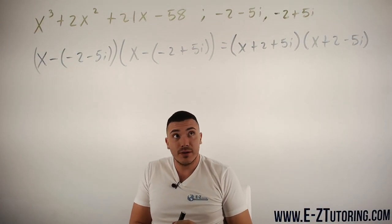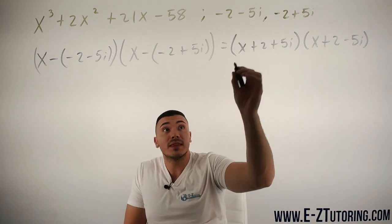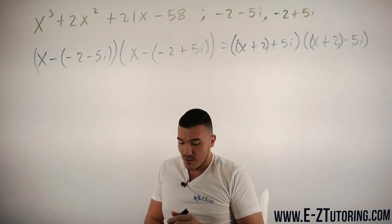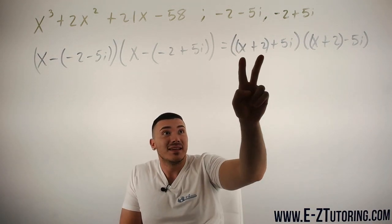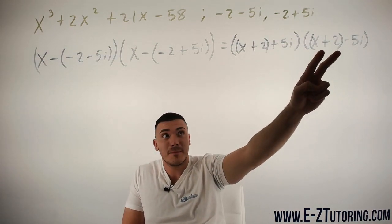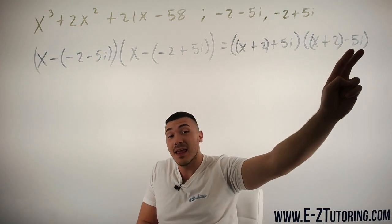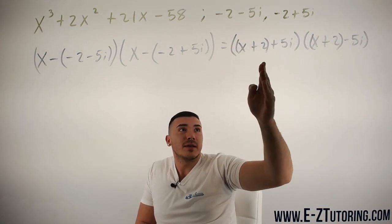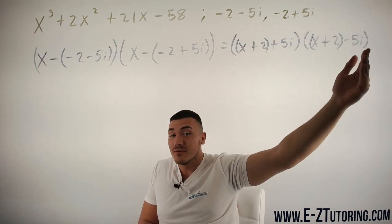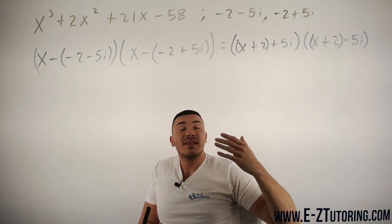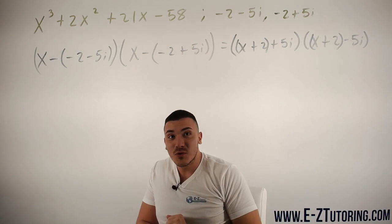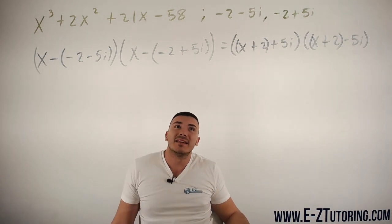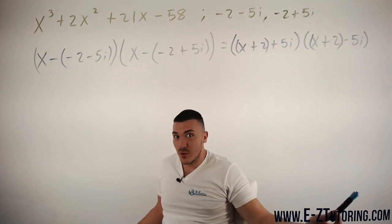So now what I'm going to do is I'm going to put parentheses around the first two terms, x+2. Why did I do that? x+2 and x+2 are the same. 5i and -5i have the difference of a negative. This is like saying (x+a)(x-a). And whenever that is the case, you will get the difference of squares when you end up foiling it out. I just want to explain why I'm doing what I'm doing.